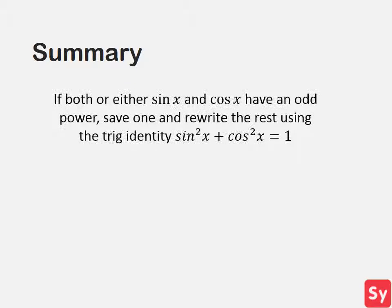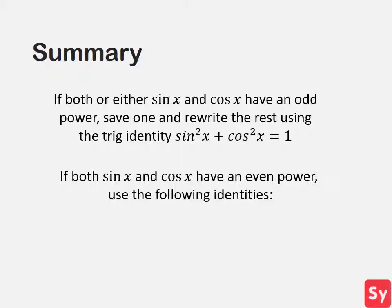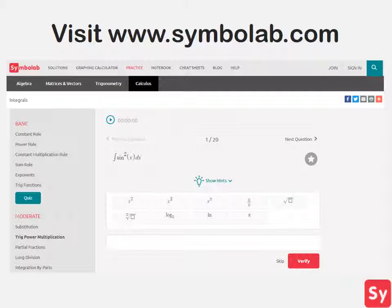Here's a summary of what we've learned. If both or either sine of x and cosine of x have an odd power, save one factor of cosine of x or sine of x, then rewrite the rest using sine of x squared plus cosine of x squared equals 1 — pulling that one factor from the odd power. If both sine of x and cosine of x have an even power, use one or more of the half-angle or double-angle identities. Solving these integrals takes a lot of practice, so for more help visit Symbolab.